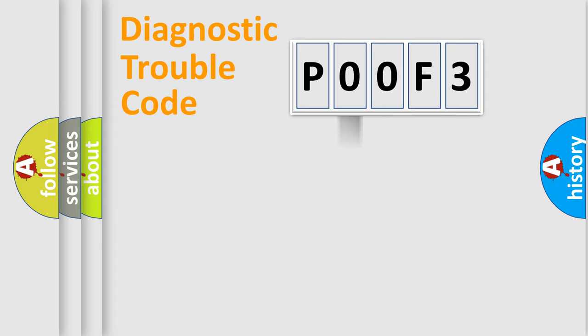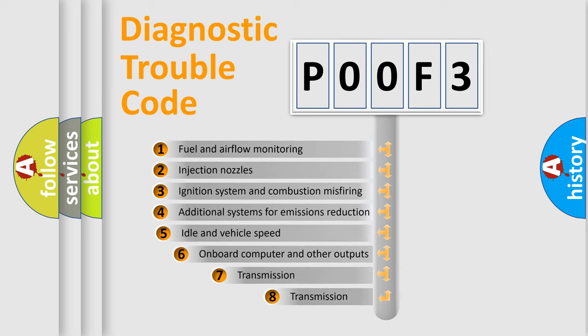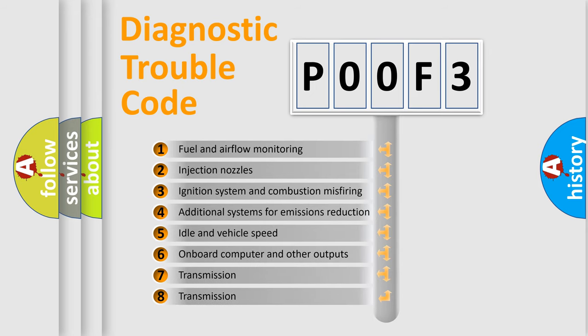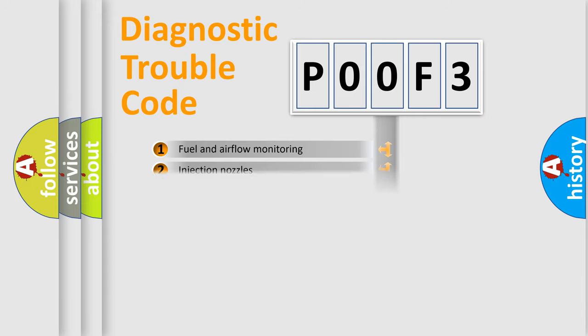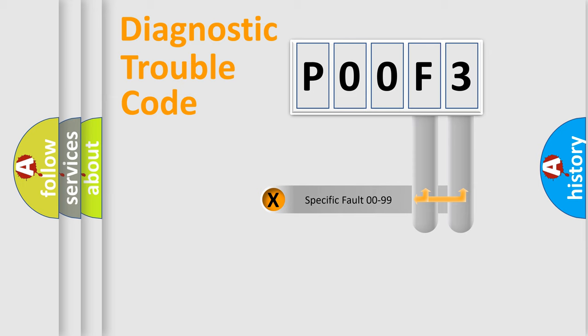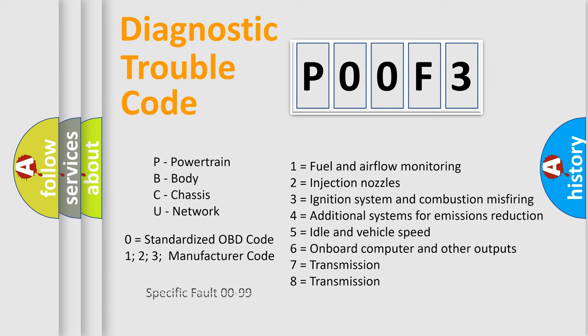The third character specifies a subset of errors. The distribution shown is valid only for the standardized DTC code. Only the last two characters define the specific fault of the group. Let's not forget that such a division is valid only if the second character code is expressed by the number zero.